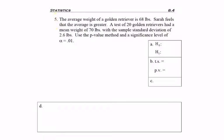Problem 5. The average weight of a golden retriever is 68 pounds. Sarah feels that the average is greater. A test of 20 golden retrievers had a mean weight of 70 pounds with a sample standard deviation of 2.6 pounds.